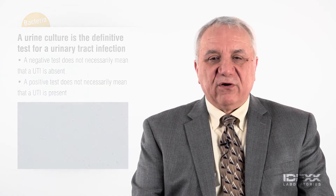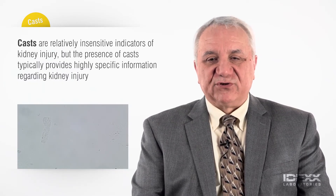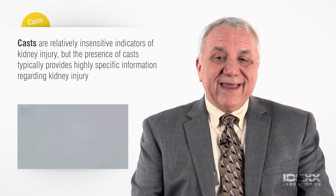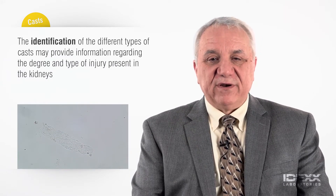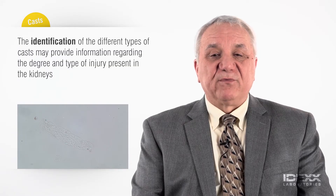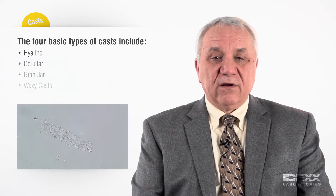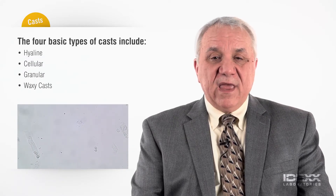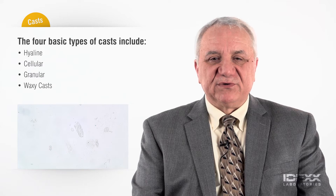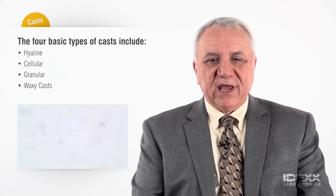A second category of formed elements of a urine specimen is the cast. Casts are cylinders of material that have been collected within the distal nephron tubular structures of the kidney. They are relatively insensitive indicators of kidney injury; however, when identified, the presence of casts provides highly specific information regarding kidney injury. In many cases, the identification of the different types of casts provides information regarding the degree and type of injury present in the kidneys. The four basic types of casts include hyaline, cellular, granular, and waxy casts. With practice, characterizing the casts as broad or narrow is possible, and this additional information may be helpful in characterizing the presence of significant renal compromise and compensation.